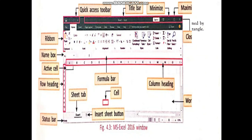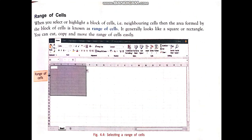Now, we pass on to the next one: range of cells. In the figure, you see selecting a range of cells. Here you select or highlight a block of cells. That is known as the range of cells, that is, neighboring cells. The area formed by the block of cells is known as the range of cells. It generally looks like a square or rectangle. After selecting the range of cells, you can cut, copy, or move the range of cells to any place. Thank you, students.